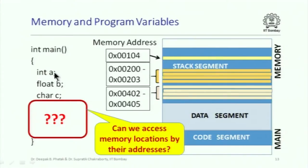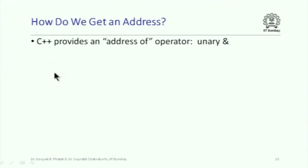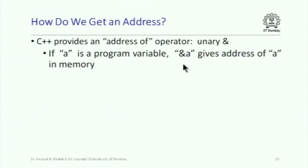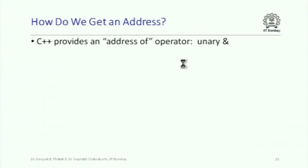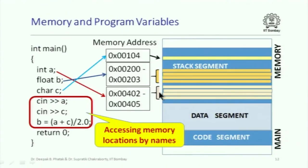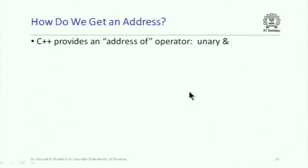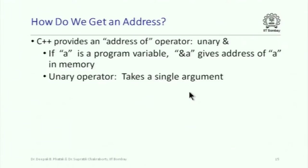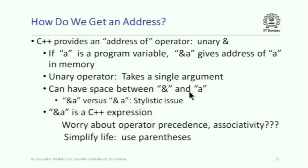Can we access memory locations by their addresses? The answer is yes. C++ has a unary ampersand operator — the & symbol. If A is a program variable, then &A will give the address of A in memory. A program variable corresponds to some locations reserved for it in memory, and the ampersand operator lets you get the address of those locations. This brings us close to what physical memory is about. The ampersand operator is a unary operator; it takes a single argument and you can write &A.